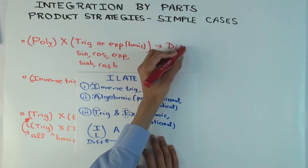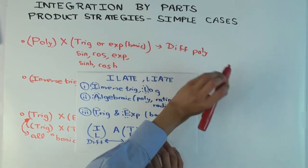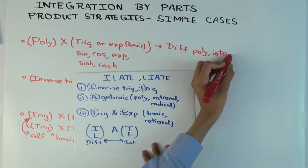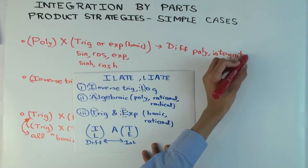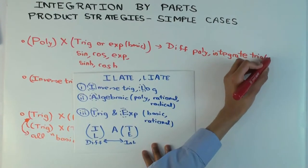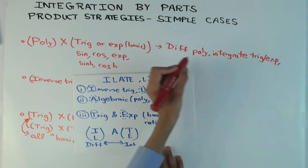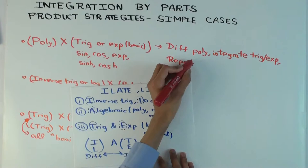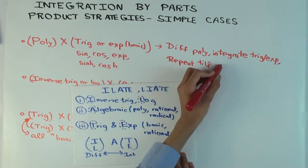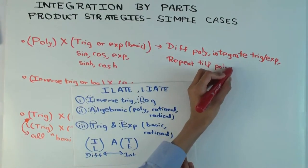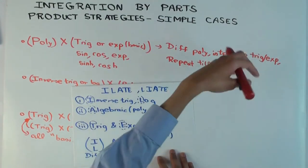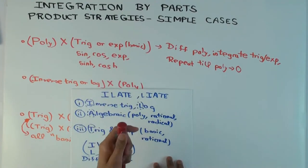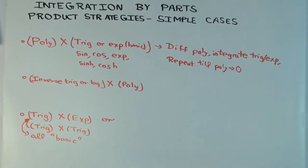and integrate the trig slash exponential, and repeat till the polynomial vanishes and you're just left with the trig-exponential. With the trig-exponential, each time you integrate, it still remains in the same family, so you can keep doing the integration.